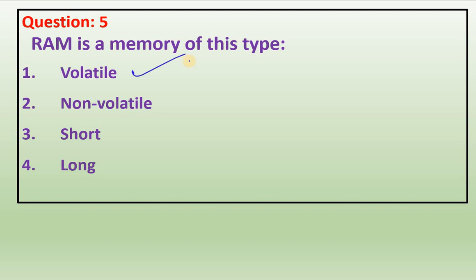The correct answer is volatile. RAM is a volatile memory, meaning when the power is switched off, whatever data is available in RAM will be lost. Whereas hard disk is non-volatile - when power is switched off, data is still saved.